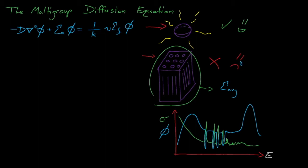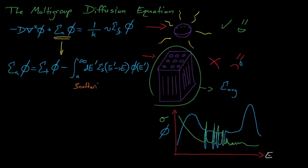Thus, we will need to develop a multiple-group, or multi-group, form of the diffusion equation. We begin this process by undoing some of the assumptions that we made to get to the one-group form of the diffusion equation. One such assumption obtained the absorption cross-section term by combining the collisional term, or the sigma-total term, with the scattering source. For a two-group diffusion equation, we must once again separate out these two terms, and that starts with re-specifying the scattering source.